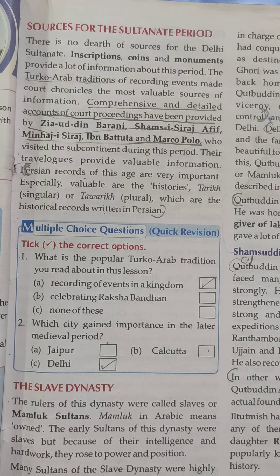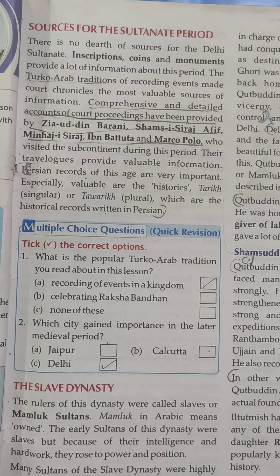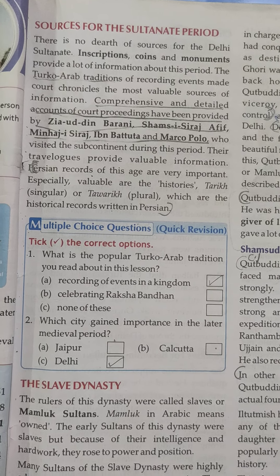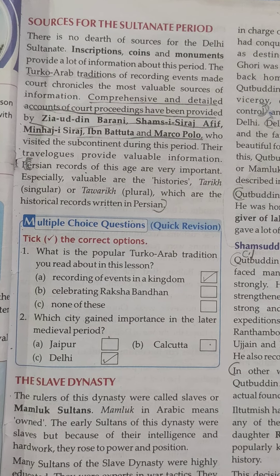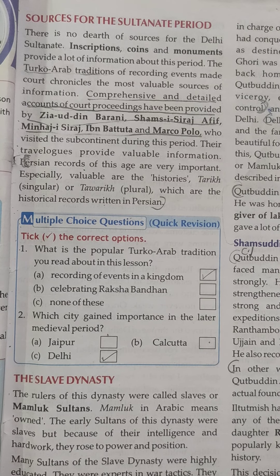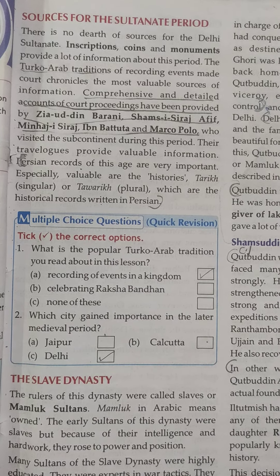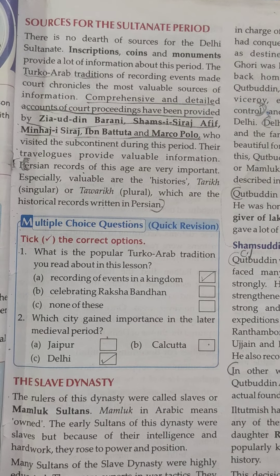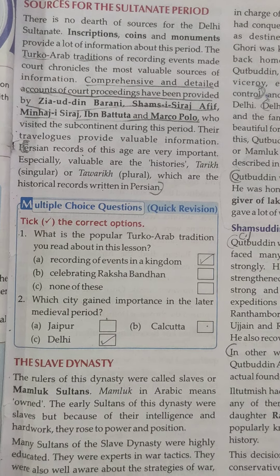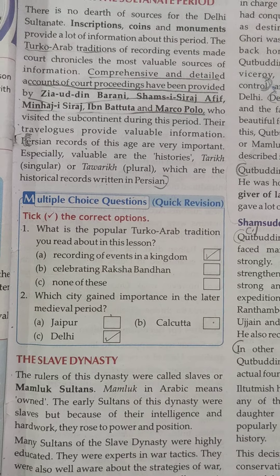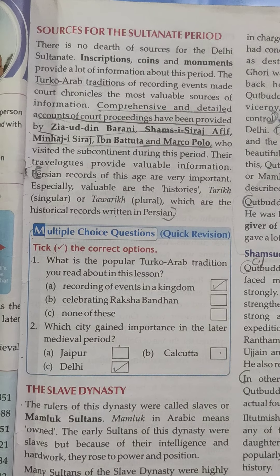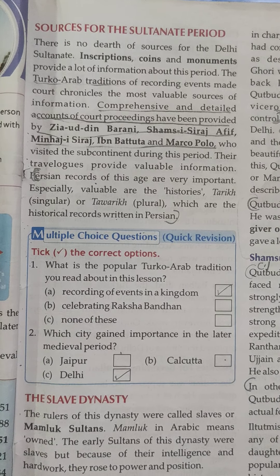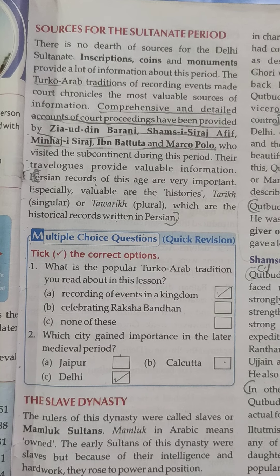Their travel logs provide valuable information. The Persian records of this age are very important. Especially valuable are the histories — tarikh (plural: tawarikh) — which are historical records written in Persian. We also know about Delhi's history from inscriptions, coins, and monuments.